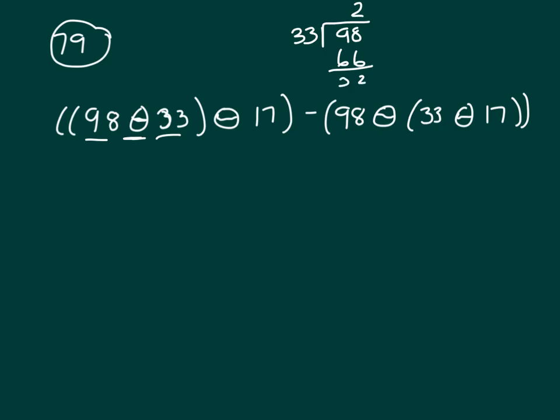Alright, so I have 98 operator 33, that represents the remainder when you do the division, so that is 32.